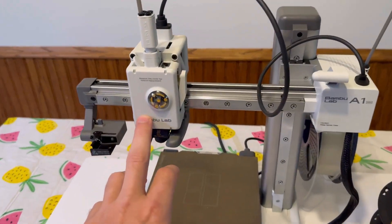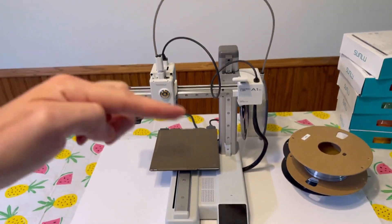That wraps up the Bamboo Lab A1 Mini disassembly. This is how to do a full teardown on this 3D printer.